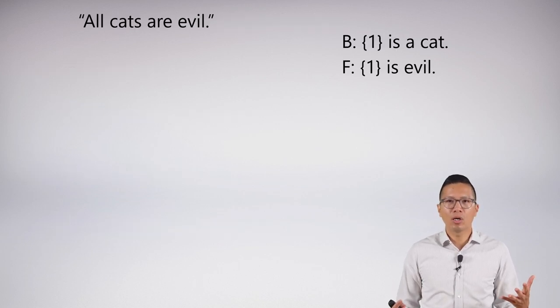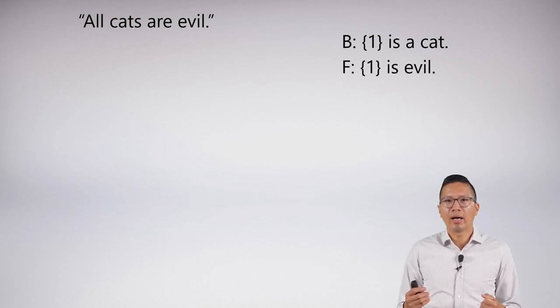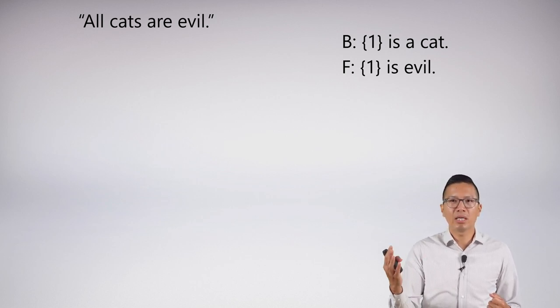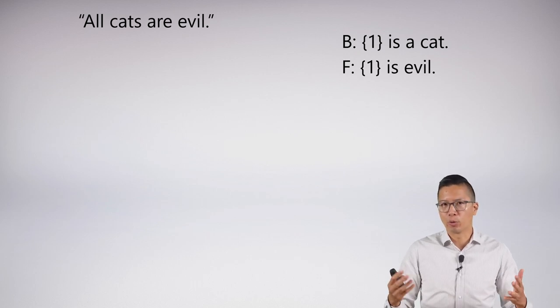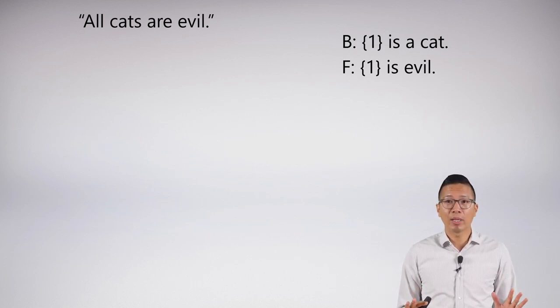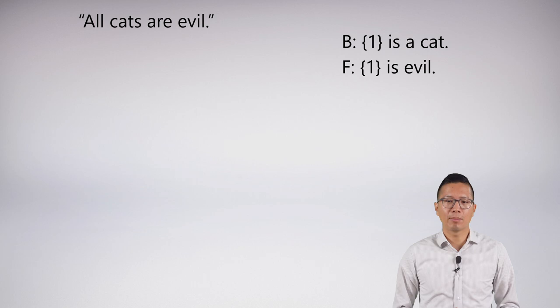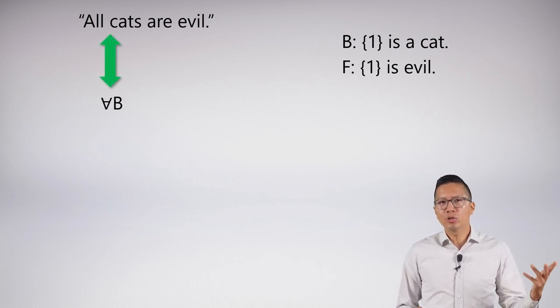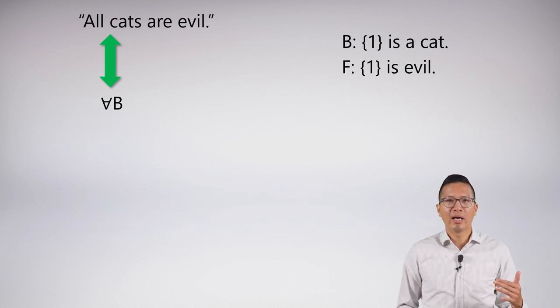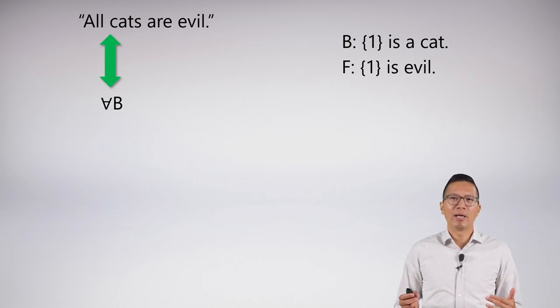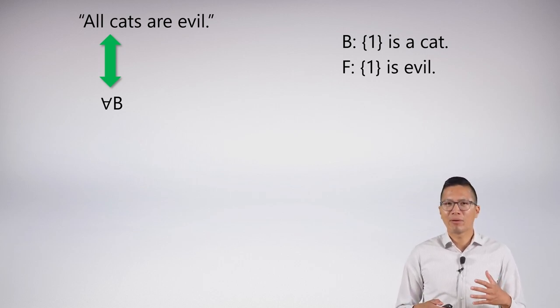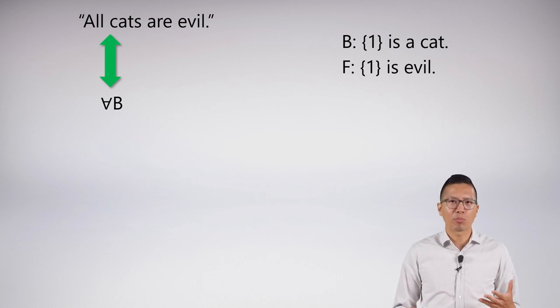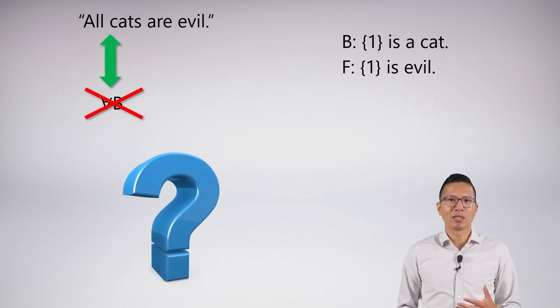How do I symbolize 'all cats are evil'? Here I have a new abbreviation scheme: B is a cat and F is evil. Those are both predicates. Notice I don't have any name letters here because there are no names in this statement, so I don't need one. Our first crack at this isn't going to go so well. I could use the universal with a capital B, and I'm saying for all B, so for all cats, but that's not quite right because I know that I'm supposed to have some sort of subject in with the predicate, so there's something missing here. And what's missing is something really important.